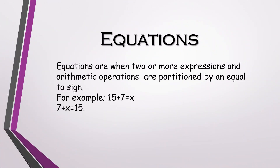Now let's learn about equations. An equation is when two or more expressions and arithmetic operations are partitioned by an equal to sign. For example, 15 plus 7 equals to x, or 7 plus x equals to 15. In the first example, 15 plus 7 is a term and x is the variable, partitioned by an equal to sign in the middle. This is a one-step equation. When there are two expressions, it will be called a two-step equation, and so on.